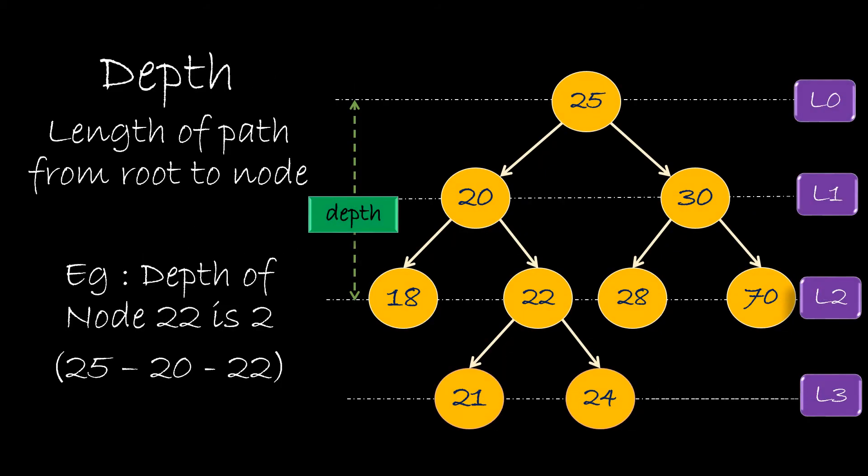Let's understand what depth is. Before that, let's see level. Here we can see that the nodes are said to be at the same level if they are at same depth. And the depth of a node is the length of path from root to the node. Here we can see that the depth of node 22 is 2, as the path from root to node 22 has 2 nodes: 25 and 20.